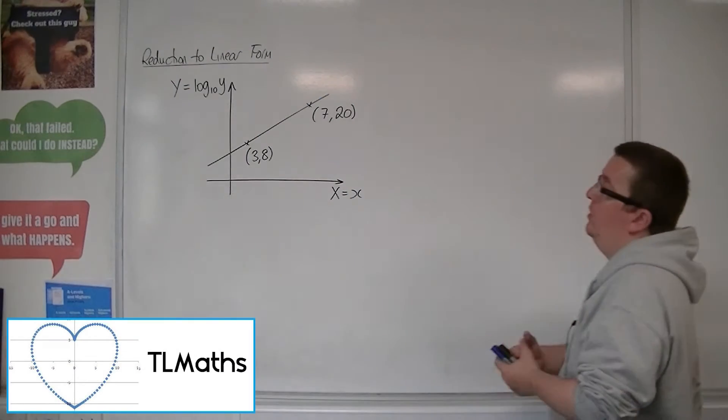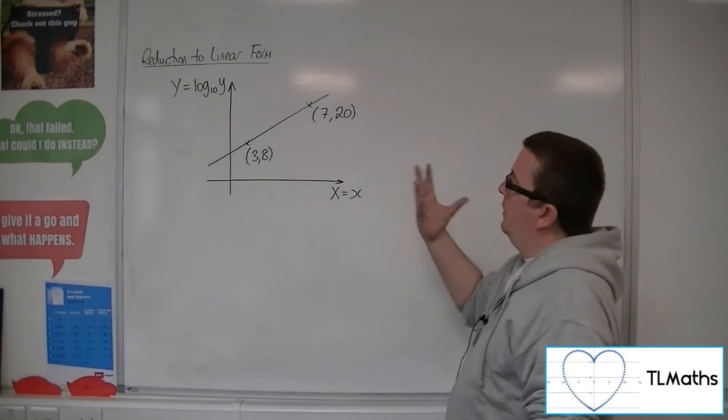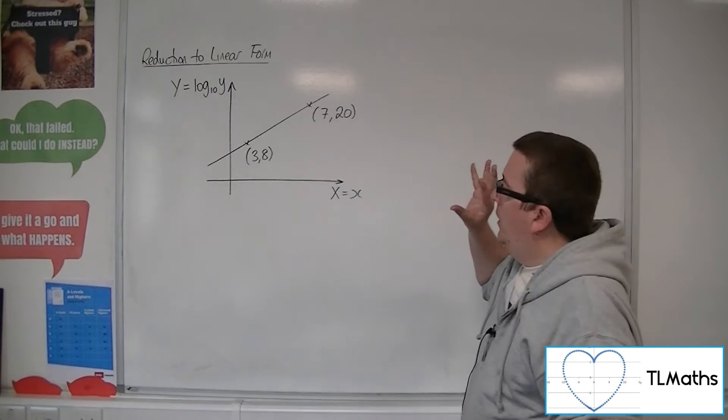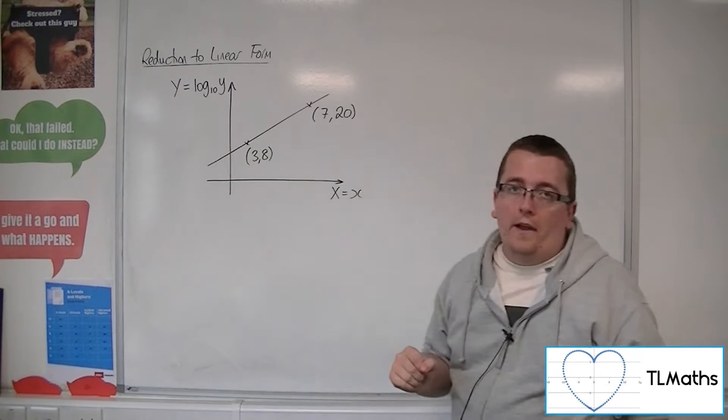So let's say I've drawn my line. I know that my line of best fit that I've drawn goes through the coordinates (3,8) and (7,20). And I've got axes of x, little x, and log 10y.